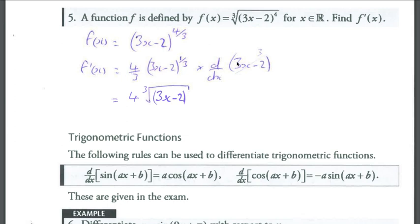So 4 thirds multiplied by 3, we're essentially doing 4 divided by 3 multiplied by 3, which is just going to be 4. So we've got 4 bracket to the 1 third. Well, bracket to the 1 third is just the cube root, so we're going to have 4 multiplied by the cube root of 3x minus 2.